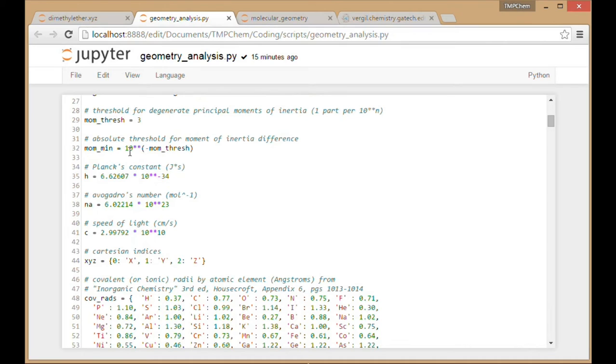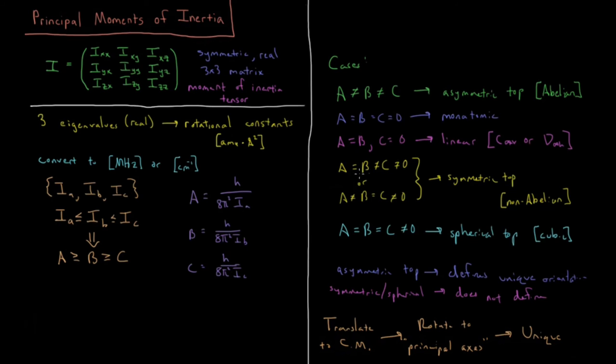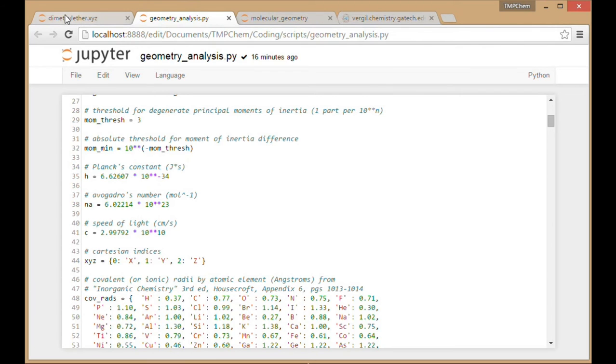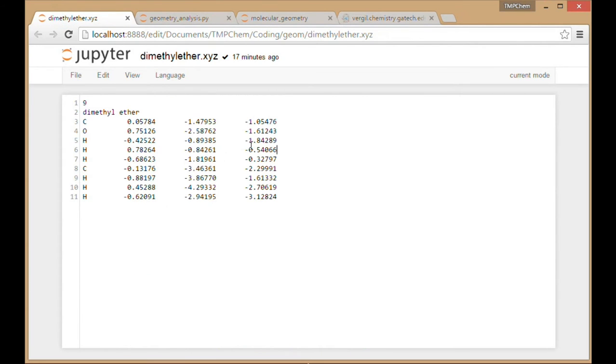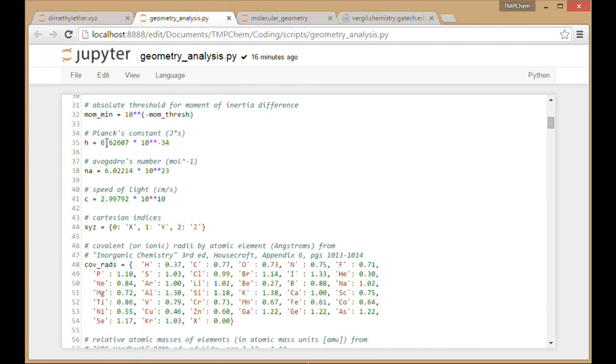Some more things about the threshold for defining when these things are equal. These things have to be equal or not equal in order to fall into these various classes. There is some numerical error in the fact that we represent these as incomplete floating point numbers. So I need some threshold, some criterion for what qualifies as being the same or not the same. I have Planck's constant, Avogadro's number, speed of light, etc.